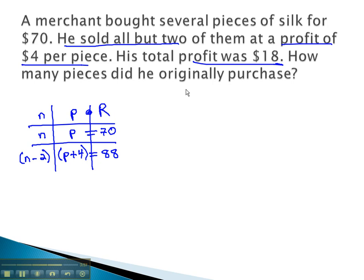Putting these together, we see the simultaneous product, number times price equals 70, and number minus 2 times price plus 4 equals 88.